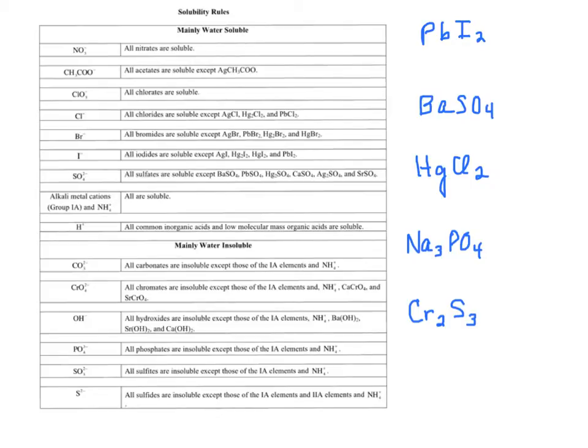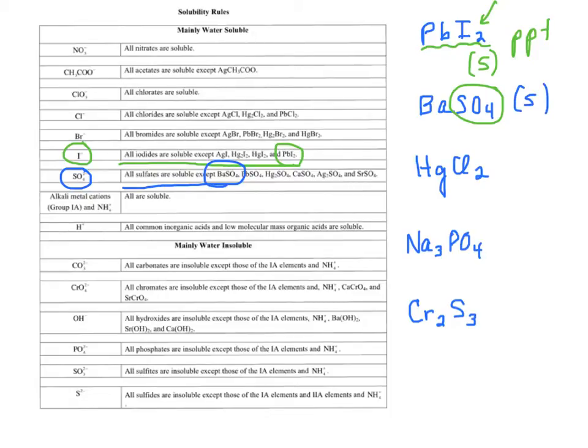So, for instance, if I want to know if PbI2 is soluble, what I find is I look for the anion. So I go down the list and I find iodides. And then I read, all iodides are soluble except, oh, okay. So this is not soluble. So when this forms in a product, in a reaction, it's going to be a precipitate. It's going to be a solid. How about barium sulfate? So we always look for the anions. So we get it on the list. Here are the sulfates. All soluble except, oh. So, again, this one is going to be a precipitate or a solid.